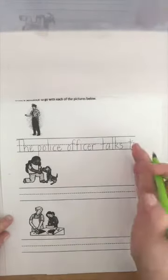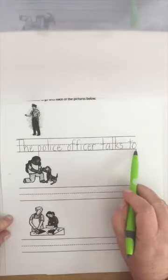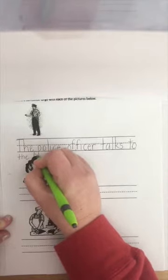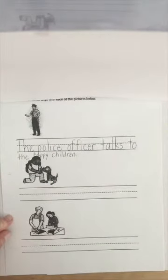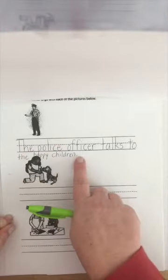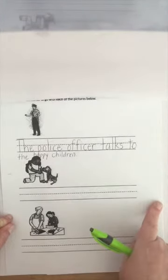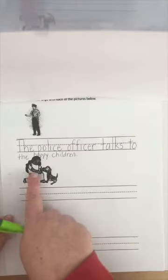Now I ran out of room — should I just put a period and be done? No. I'm going to come back to the left and write it underneath to fit it all in. I'm not going to write down the side, I'm not going to write the words backwards. When you get to the end of the line, you go back over to the left. So: 'The police officer talks to the happy children.' I know you don't see any happy children in the picture, but I added a detail. I have a capital letter, a period, and word spaces in between my words.